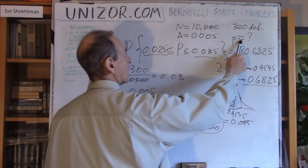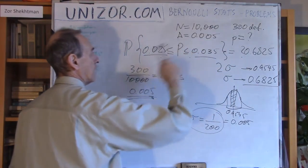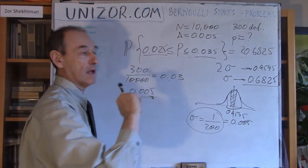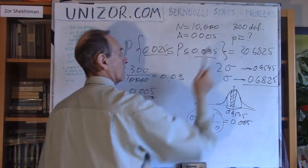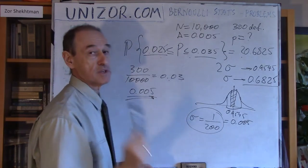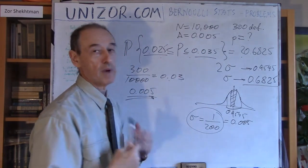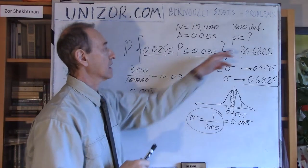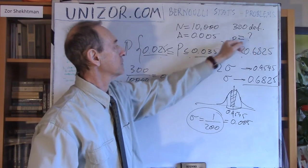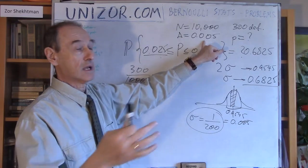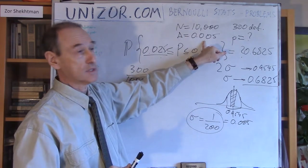That's the second problem: establishing the level of certainty when the margin of error is given. The first problem established the certainty level and found the margin of error — 0.9545 certainty gave a 0.01 margin. If I accept a smaller certainty level, I can narrow the interval by half.